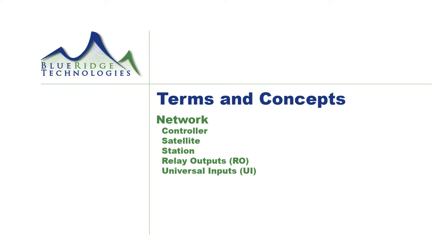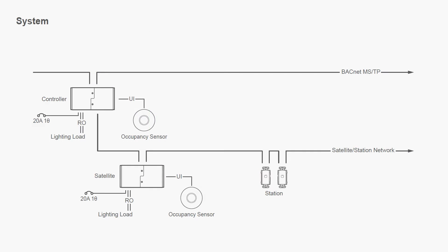Network terms include controller, satellite, station, relay outputs, and universal inputs. To define these terms, we'll use our basic system riser diagram. You can see we have a BACnet MSDP network and a subnetwork called the satellite station network.